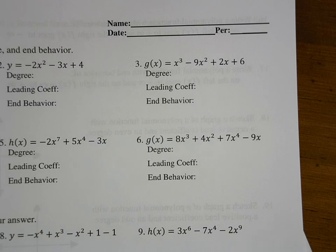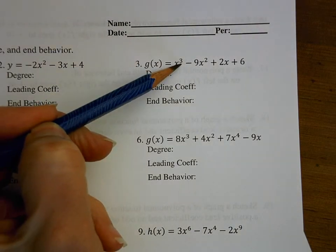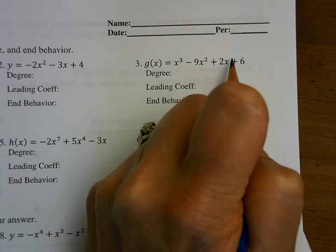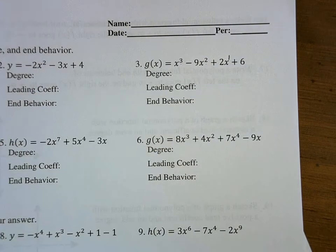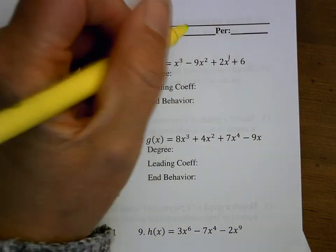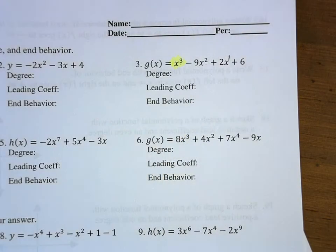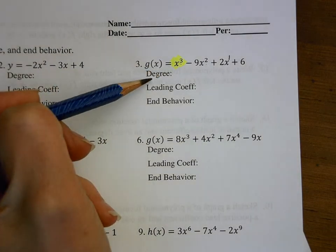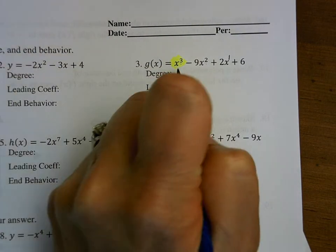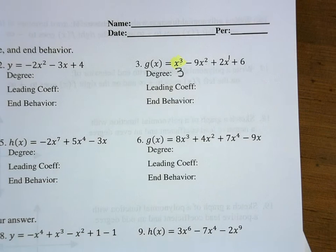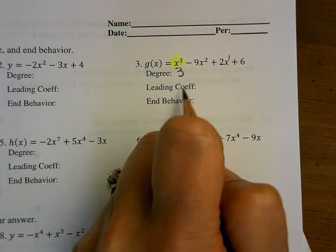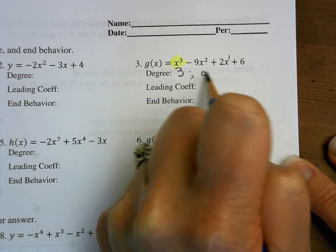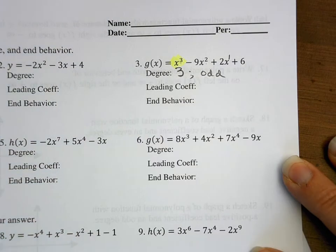The first thing I want to do is search and look at all of my powers. So here I have a power of 3, a power of 2, a power of 1, and then no power here. The highest power is 3, so I'm going to highlight that. The exponent is my degree, so that's a degree of 3, and because 3 is an odd number, I'm going to write odd.